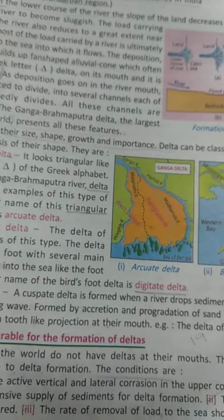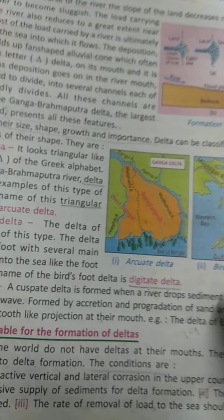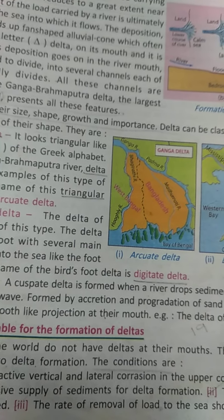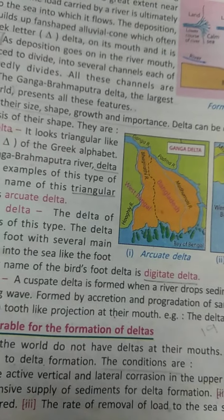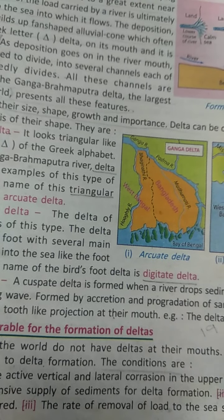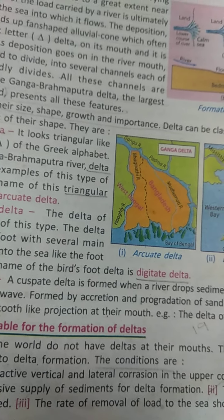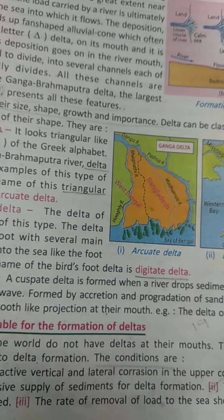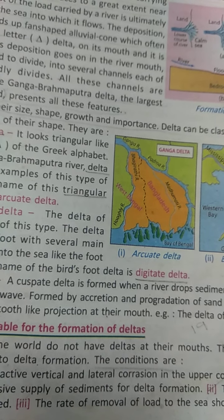In a bird foot delta, the delta is formed in the shape of a bird's foot. This delta looks like a bird foot because there are several main branches that extend into the sea like the toes of a bird. Its other name is the digitate delta.